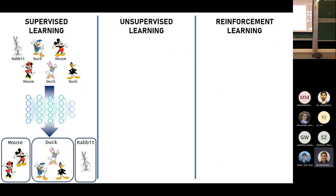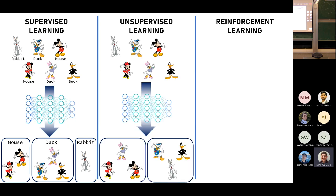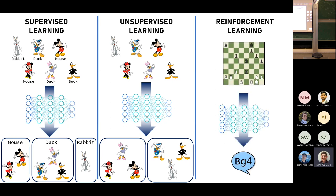In supervised learning, you have a dataset with labels. You train a neural network to identify, given data without a label, what the label should be — for example, identifying pictures of a mouse, a duck, or a rabbit. In unsupervised learning, your training data doesn't have labels, and you can use it for things like clustering — grouping images by similarity, such as characters with shoes versus without, in a different way than was prescribed.